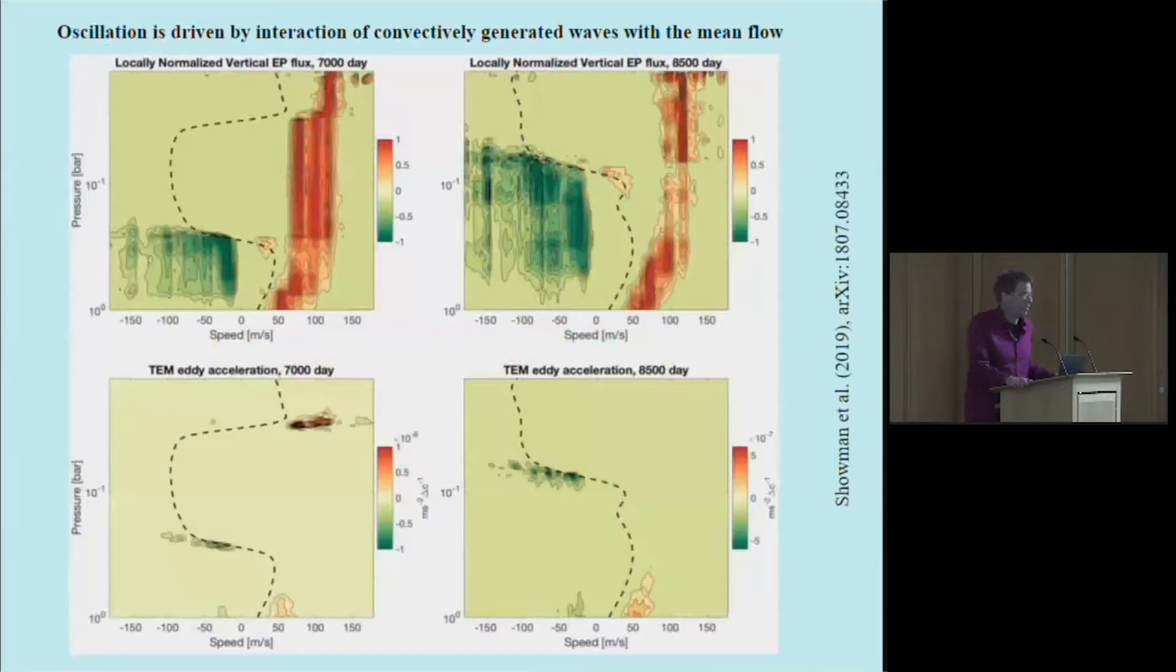The mechanism, it turns out, is quite similar to the well-known mechanism that drives the QBO in the case of Earth and basically involves the interaction of these convectively generated waves with mean flow in the stratosphere. I probably don't have time to walk through all the subtleties of this, but I'll try to sketch it out in my last minute or so. Feel free to ask follow-up questions.